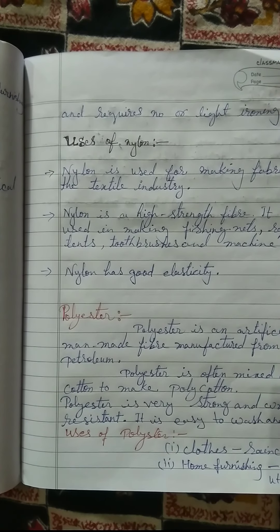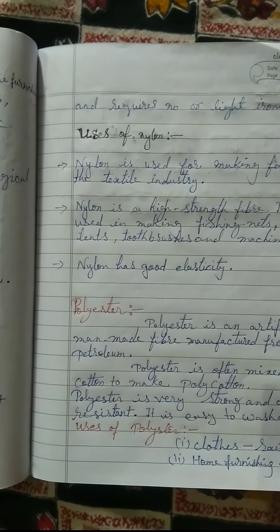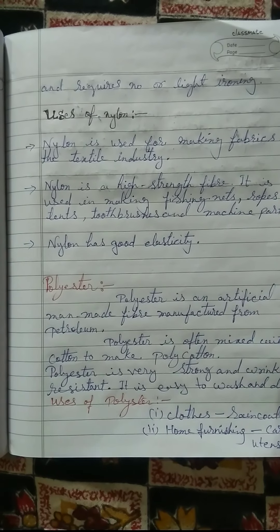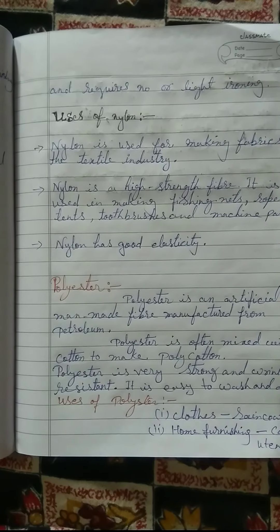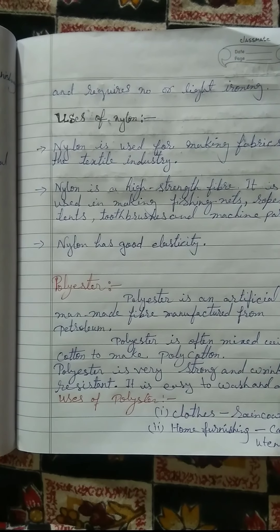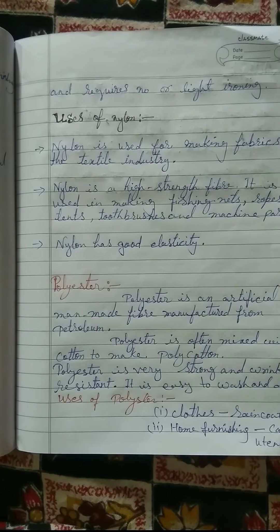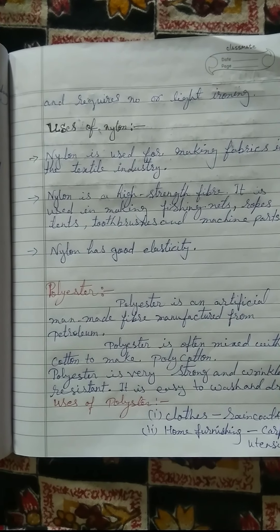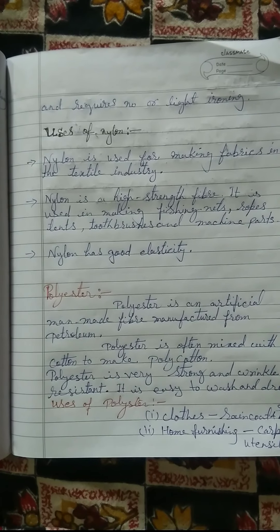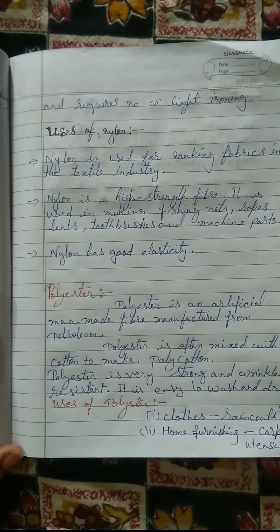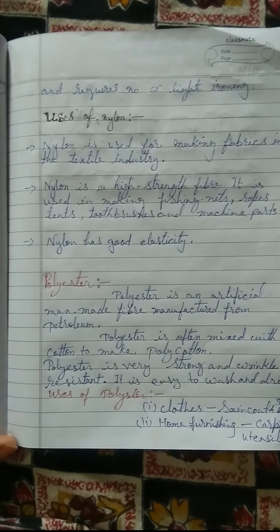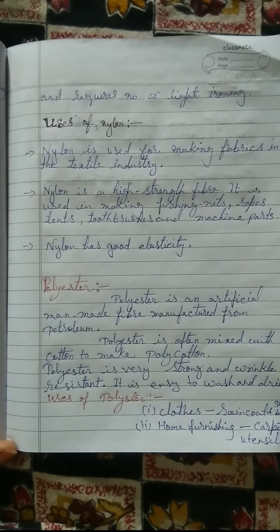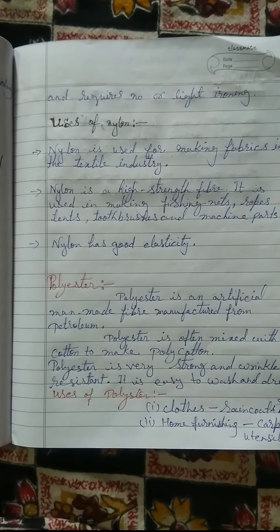Uses of nylon: nylon is used for making fabrics in the textile industry. It is a high-strength fiber used in making fishing nets, ropes, tents, toothbrushes, and machine parts. Nylon has good elasticity.